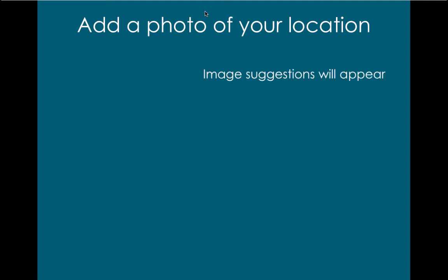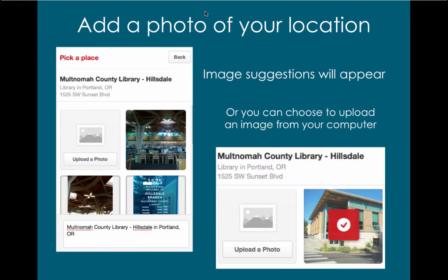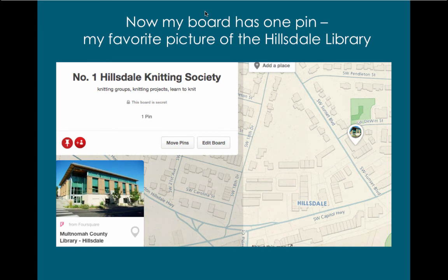Then you can add a photo of your location. Image suggestions will appear, or you can choose to upload an image from your computer. I chose to upload an image of the Hillsdale Library that I had already found and saved. Now my board has one pin — my favorite picture of the Hillsdale Library — and the photo has been uploaded.